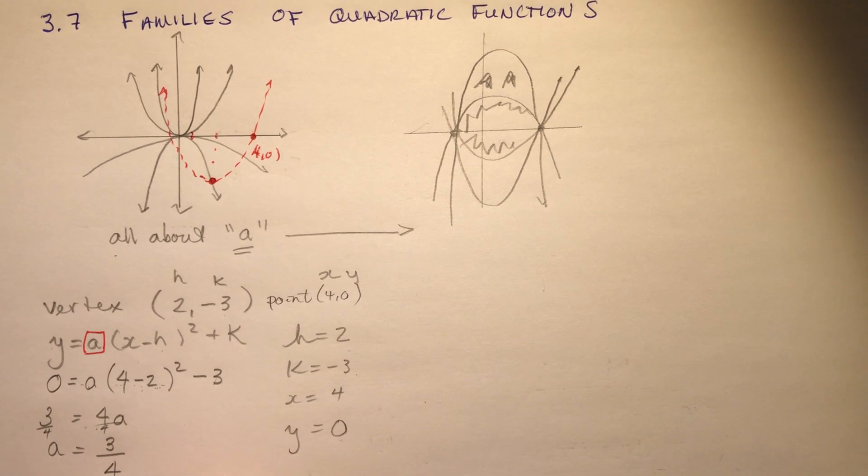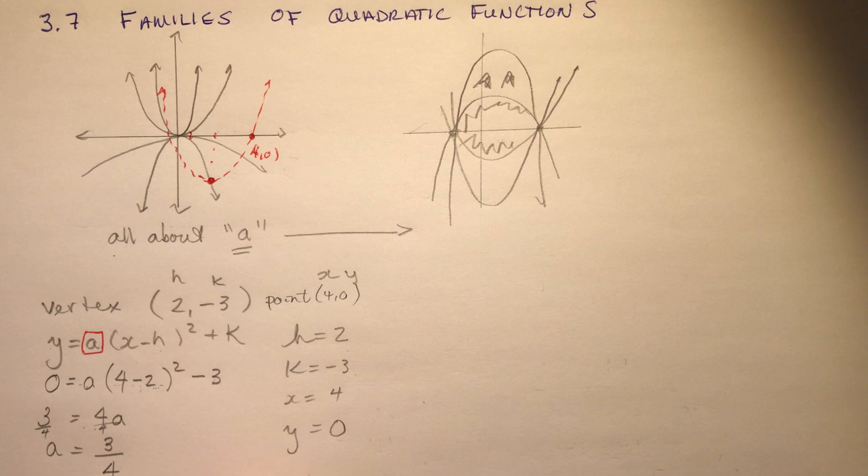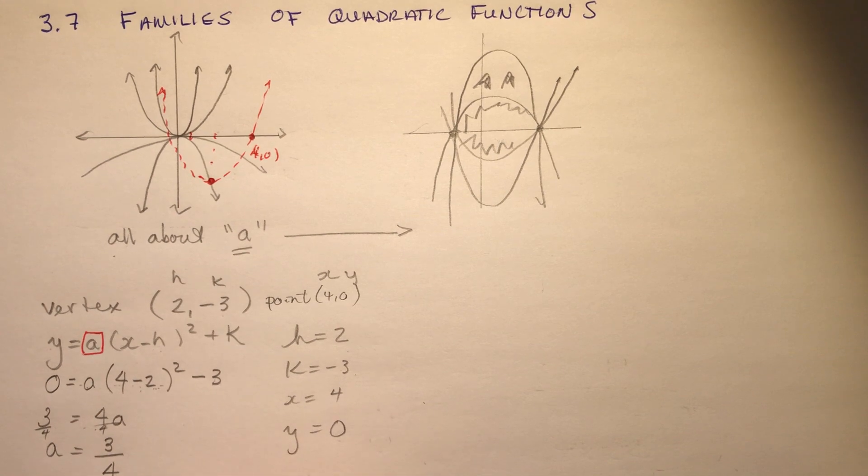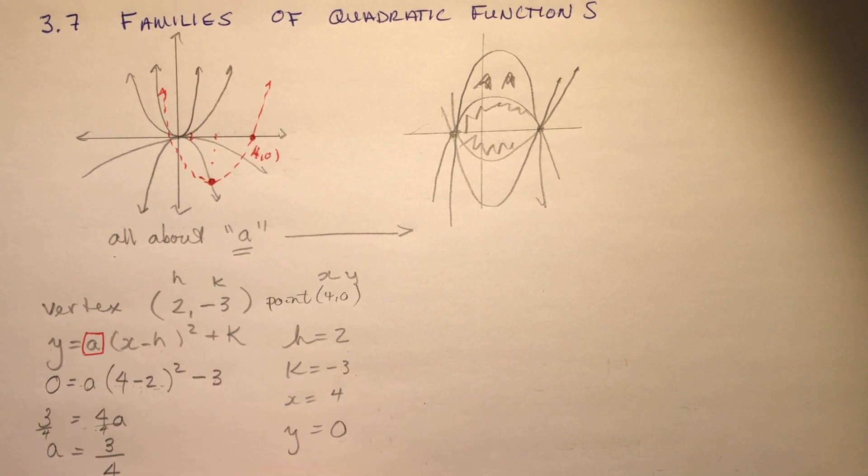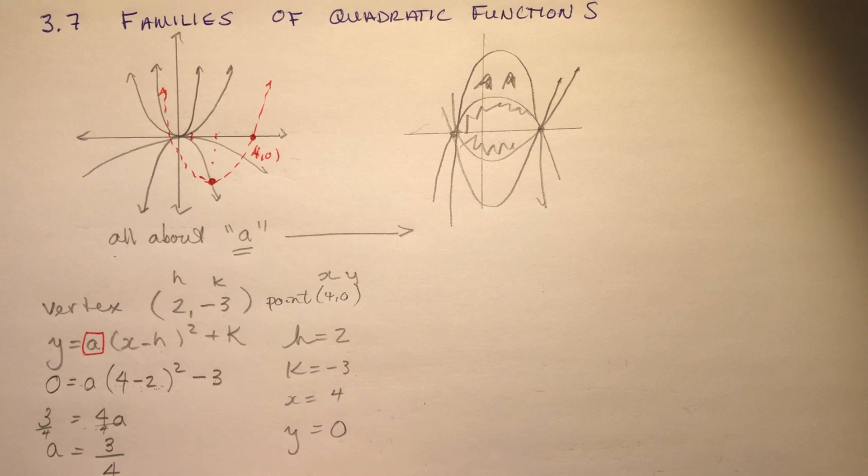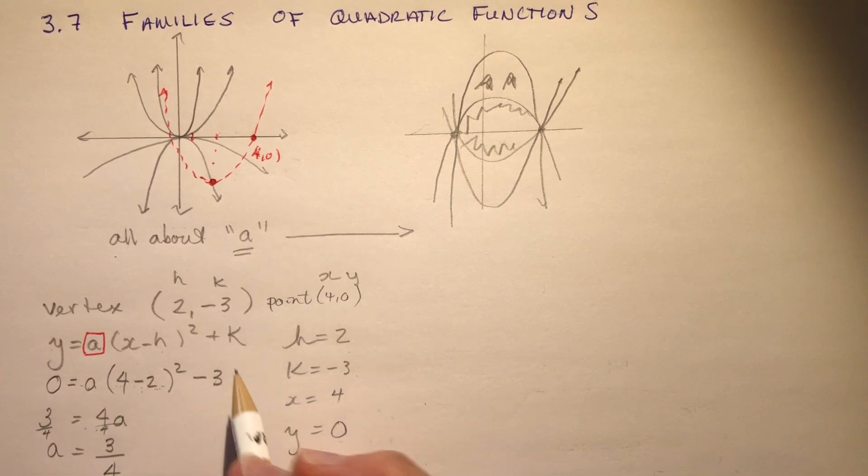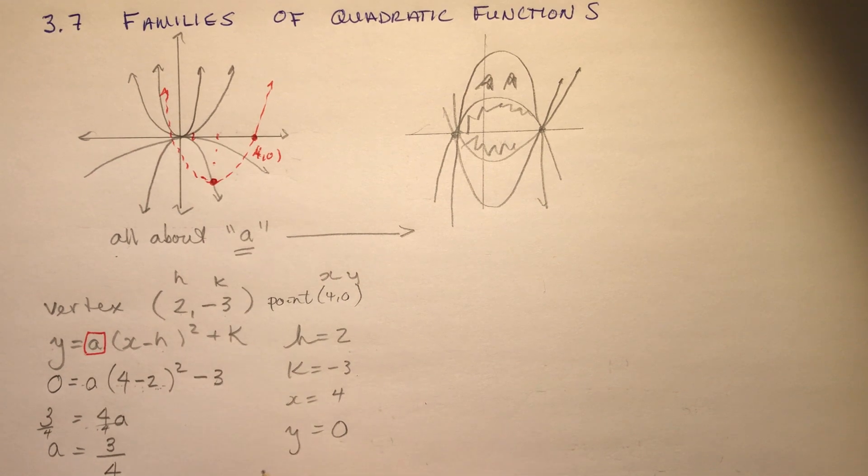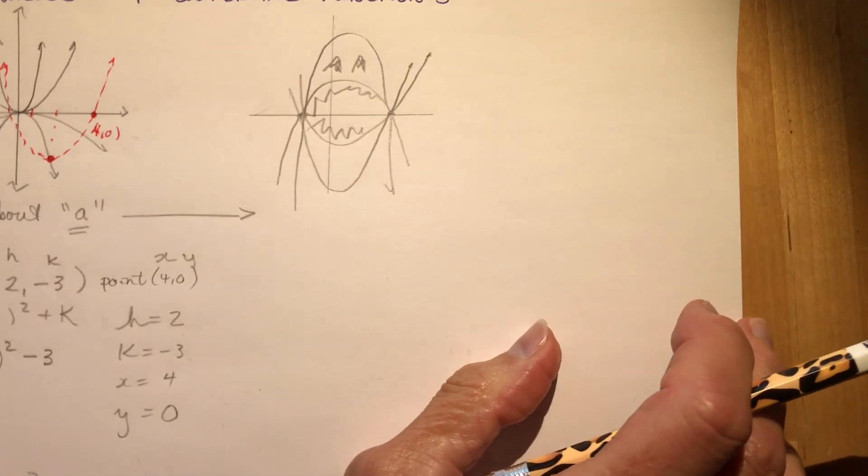So if a is three quarters, so now I can tell you the equation of that exact parabola that I just pulled right out of my head. And there we go, there's my equation. Vertex was two minus three. Don't forget when you plug it in, it has to be minus h. So minus the two gives me this equation. So that's how you would find the equation for one in vertex form.